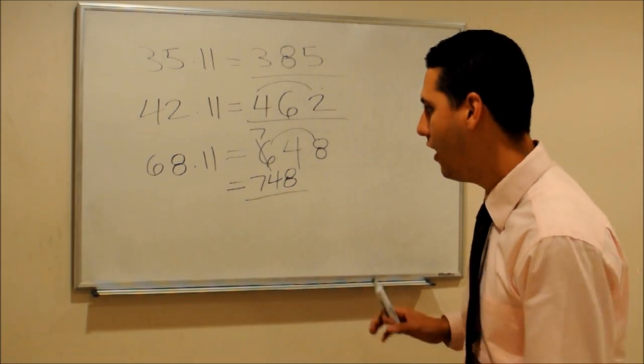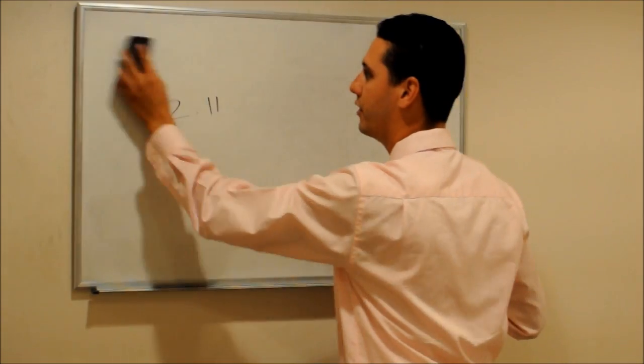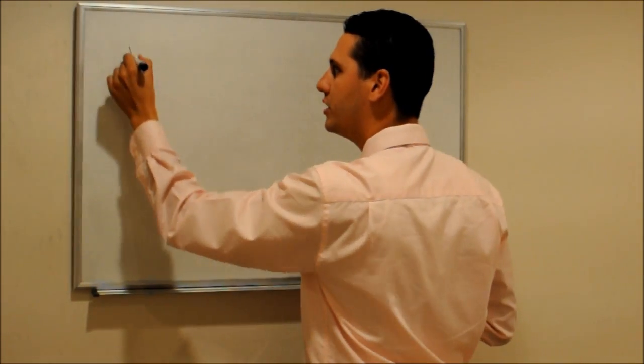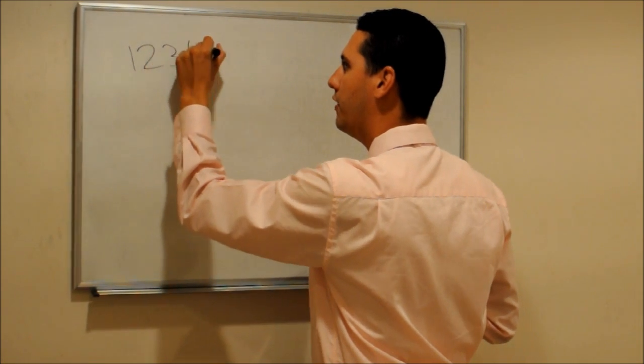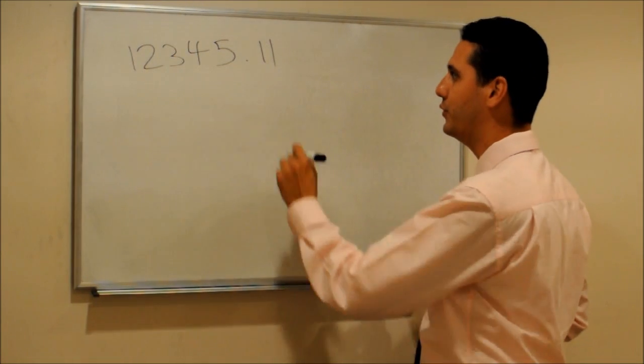Now let me show you how you can apply this to any number. For example, let's say we have a big number. Let's put a simple example: 1, 2, 3, 4, 5 times 11. This is the right way of doing this.